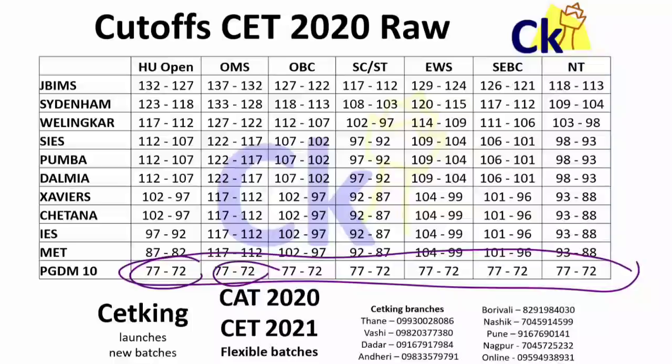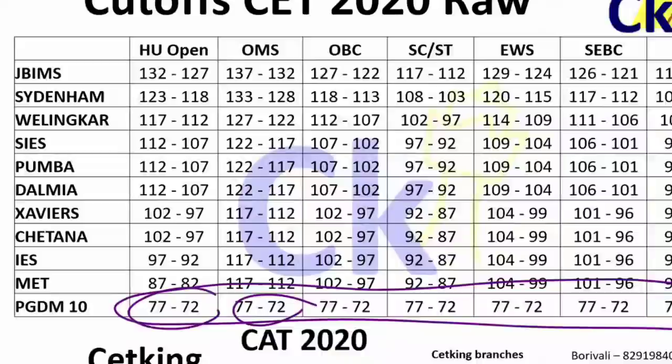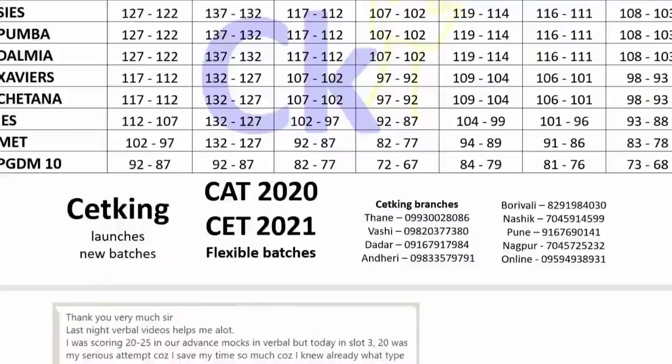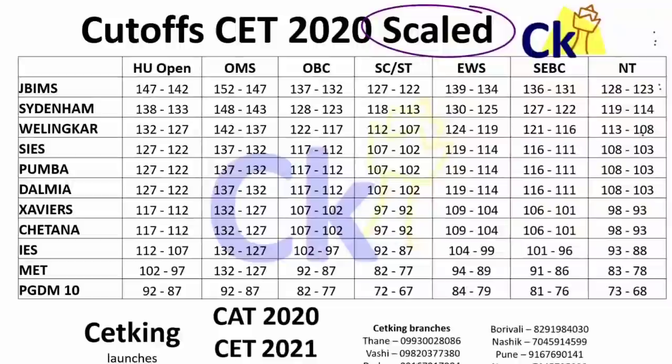Toh Sydnam, Wilinkar, SIS, Dalmiya - all the top 10 colleges ka cutoff yeh aapke saamne hai. Aapke video pause karke you can just check out the cutoff for your category. This is the raw score and this is the scaled cutoff.